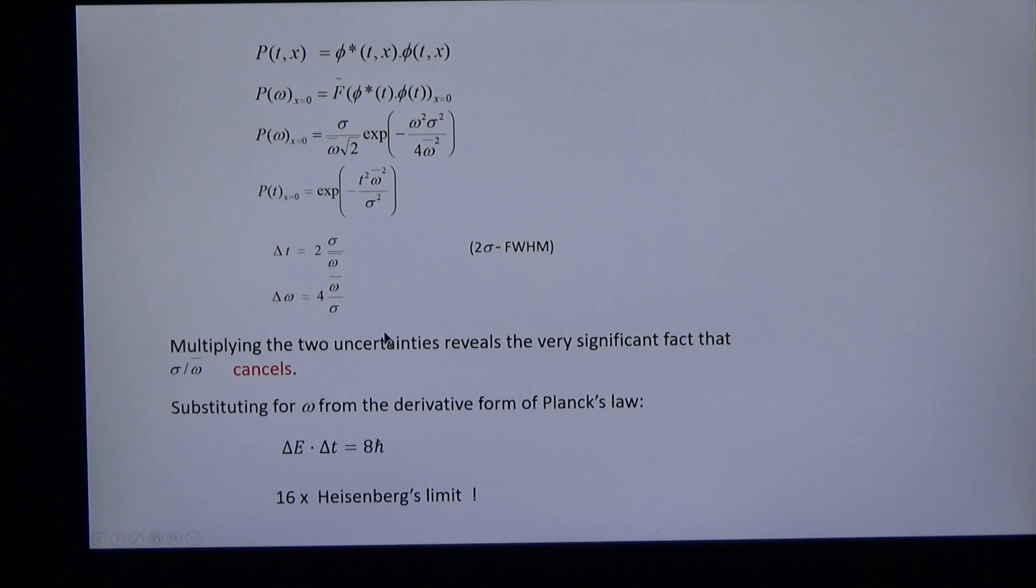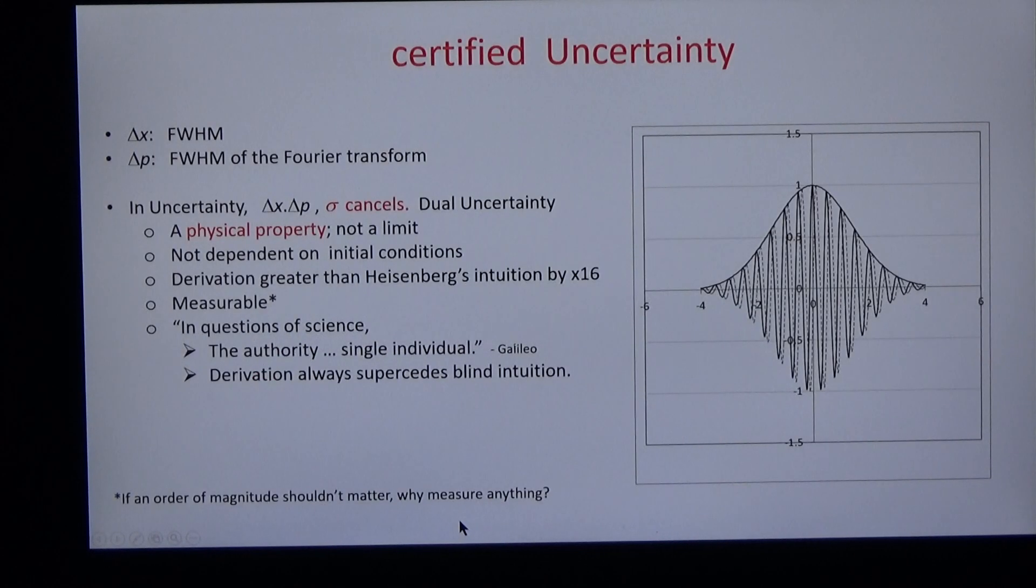The bad news is that when you multiply these two uncertainties, the dual uncertainty has a value 16 times greater than Heisenberg's limit, whatever that may be. In questions of science, the authority of a thousand is not worth the humble reasoning of a single individual. In questions of science, the derivation always supersedes the blind intuition. And if an order of magnitude is not worth measuring, then what is?